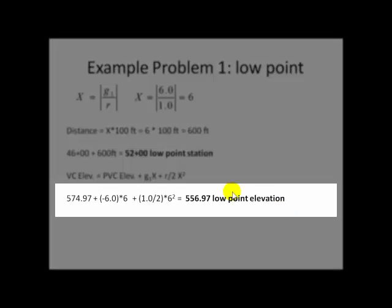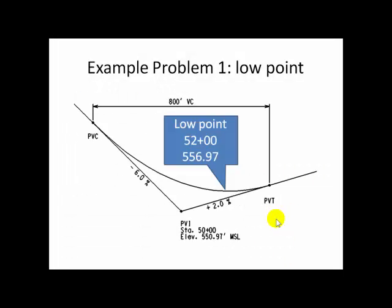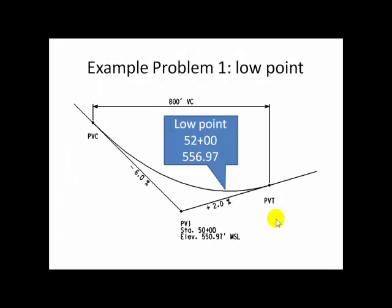And you can see here at the bottom of the screen the calculation that gives us that low point elevation. Notice that the low point doesn't occur directly over the PVI. In fact, the low point on a sag vertical curve or the high point on a crest vertical curve usually occurs under or over the flatter of the two slopes. In this case, the flatter of our two slopes is the positive 2.0.